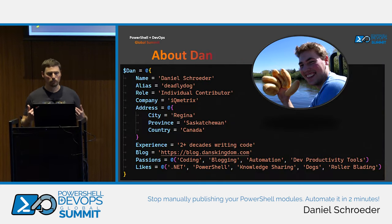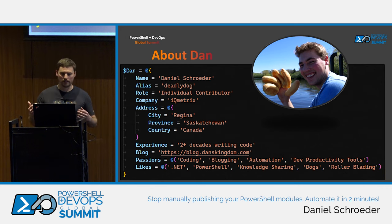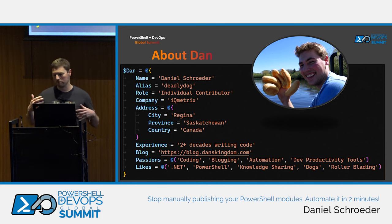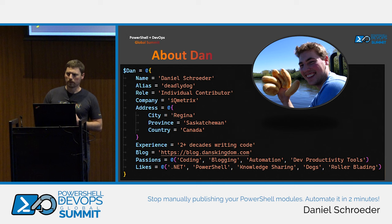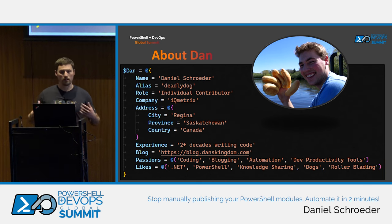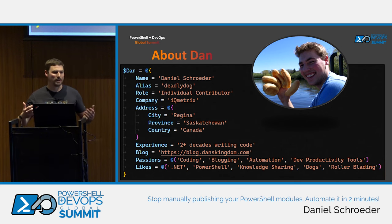My name is Daniel Schroeder. My online alias is Deadly Dog pretty much everywhere — you can find me on Twitter, GitHub, Mastodon, and LinkedIn. I've been a software developer for close to 25 years now. The past five years I've had more of a focus on DevOps and pipelines. I've been blogging for over a decade, and what I'm really passionate about is making tools to improve developer experiences.